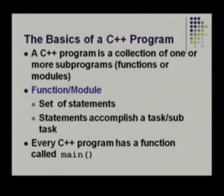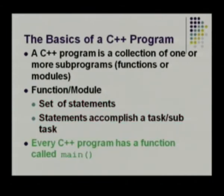A function or module contains a set of statements, and these statements accomplish the task or subtask. Every C++ program, like a C program, needs to have a function called main. The main function is the starting point of any C program — the compiler starts execution from there — and in C++ that is the same case.